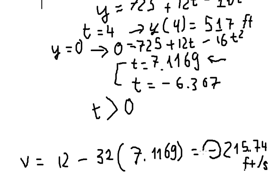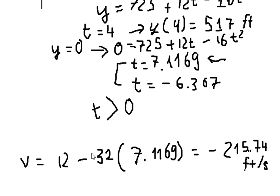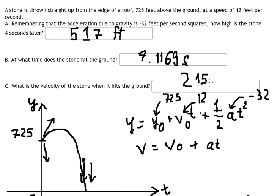Why do we have a negative sign here? Because when we throw the stone it initially goes upward, but gravity pulls it downward. That means the acceleration and initial velocity are in opposite directions. However, when the stone comes down, the velocity is going down and so is the acceleration — they are in the same direction. So the magnitude of velocity when it arrives is 215.74 feet per second, and that is the final answer.